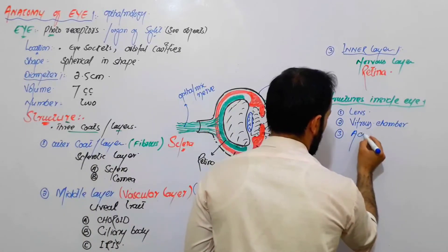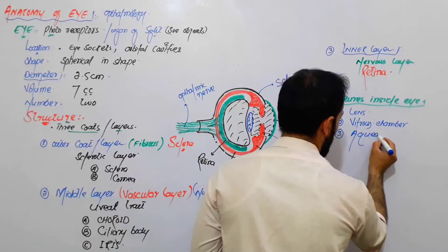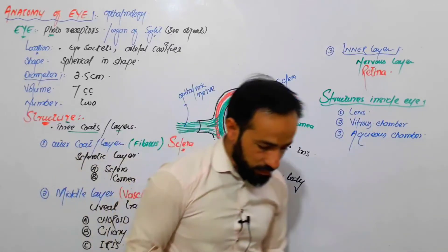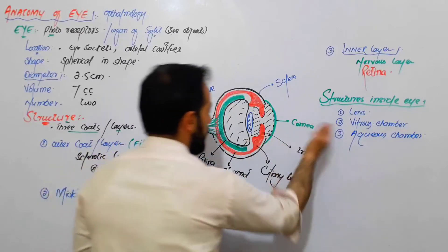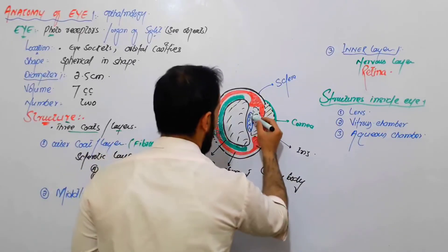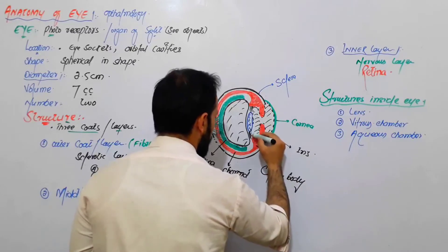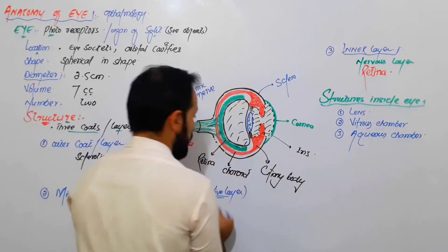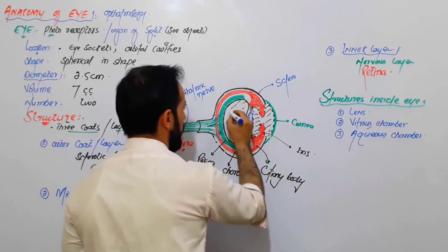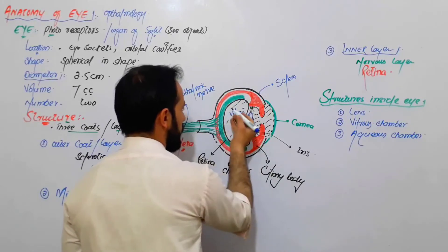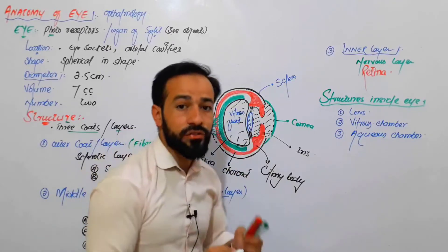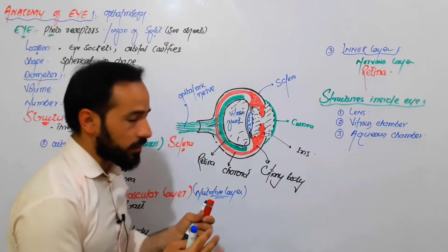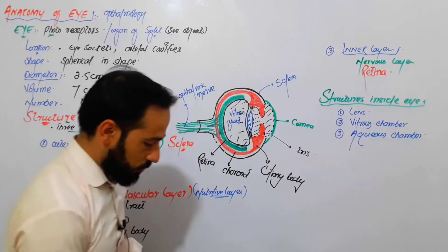So the structures inside the eye are: the aqueous chamber, the lens, and the vitreous chamber. The lens is not simply placed — it is suspended here through suspensory ligaments, and we will have lectures on them. Inside the vitreous chamber we have vitreous fluid, also called vitreous humor. Inside the aqueous chamber we have the aqueous fluid. We will have different lectures on each of them.